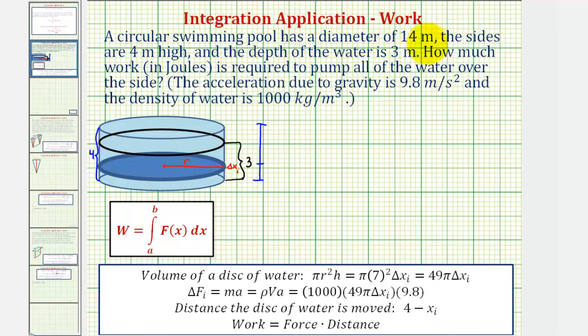A circular swimming pool has a diameter of 14 meters. The sides are four meters high, and the depth of the water is three meters. How much work in joules is required to pump all of the water over the side? The acceleration due to gravity is 9.8 meters per second squared, and the density of water is 1,000 kilograms per meter cubed.